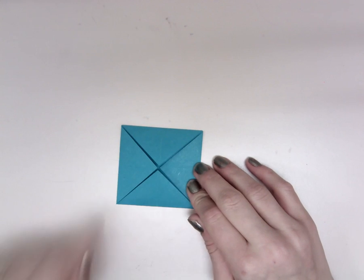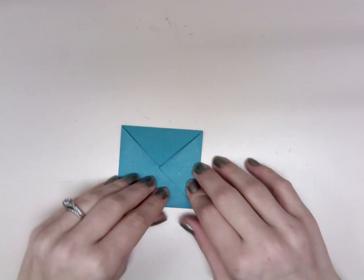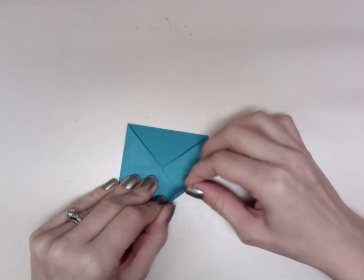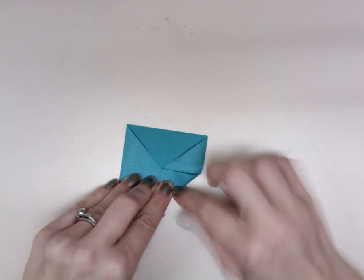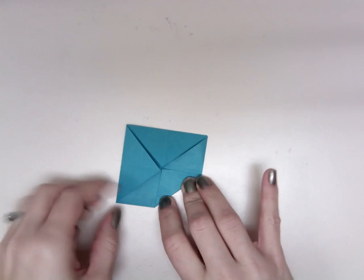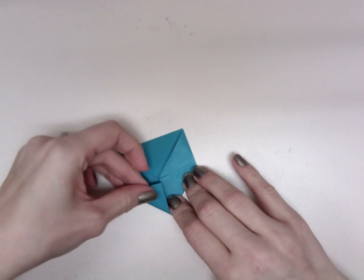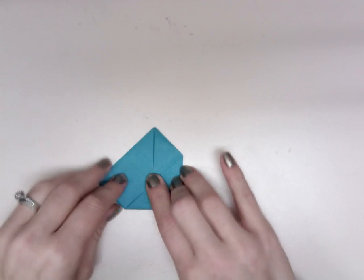Once you're done folding all four in once, then you're going to do the same thing again. You're going to take all four corners and fold them into the middle, so it's going to be an even smaller diamond or square.